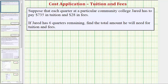Suppose that each quarter at a particular community college, Jared has to pay $735 in tuition and $28 in fees. If Jared has six quarters remaining, find the total amount he will need for tuition and fees.